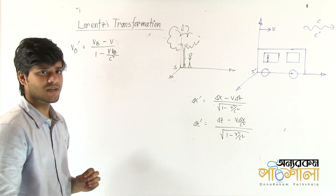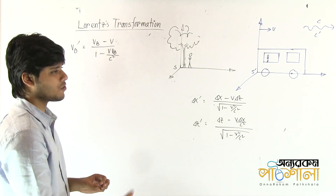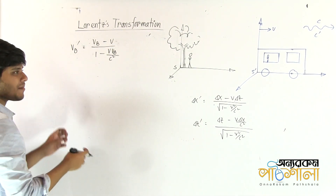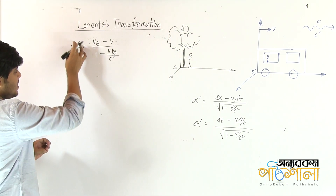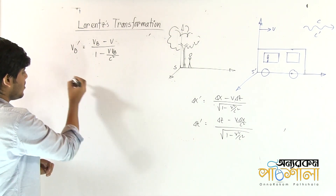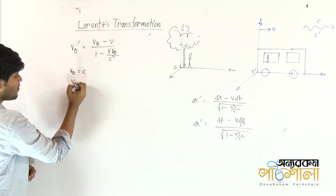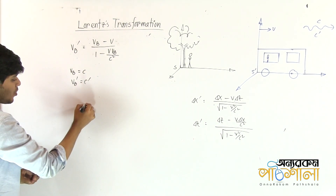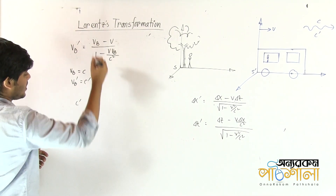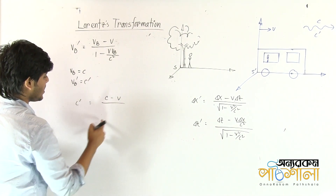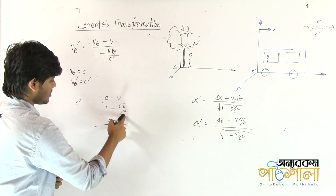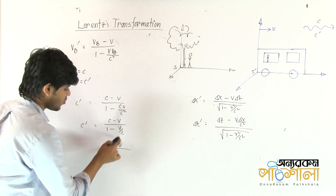We can verify: if vb is equal to c, then vb prime is equal to c. If we have a transformation, then we have vb equal to c and vb' equal to c'. And if we have a transformation, then c is equal to c'. Here we have c' and here we have c minus v. It is 1 minus cv by c squared. c minus v, 1 minus v by c — c minus v is equal to c minus v, because we have to simplify it.